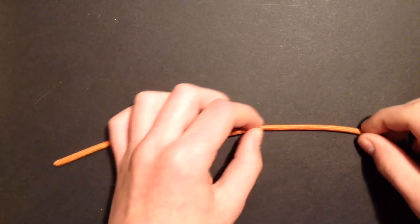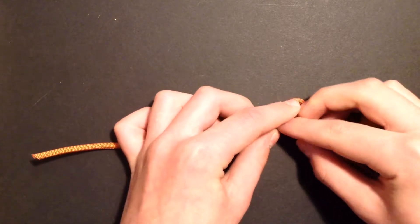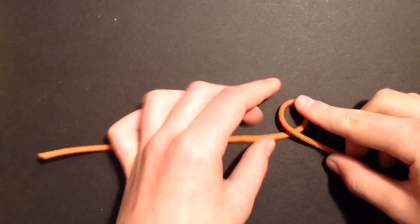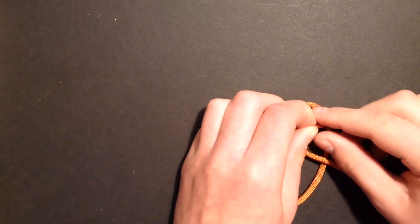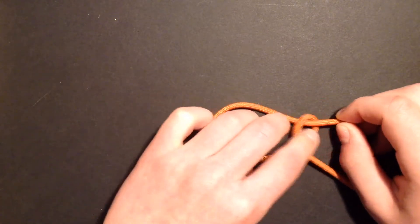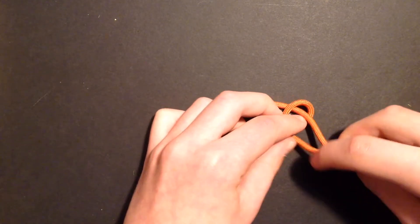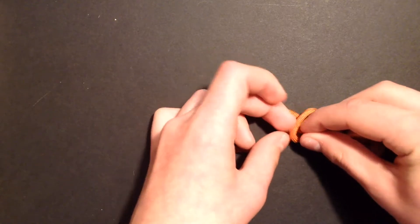When tying your bowline, you may think that you can make a loop on the standing end. Then, take the running end, pass it through the loop, around the standing end, and back into the loop.